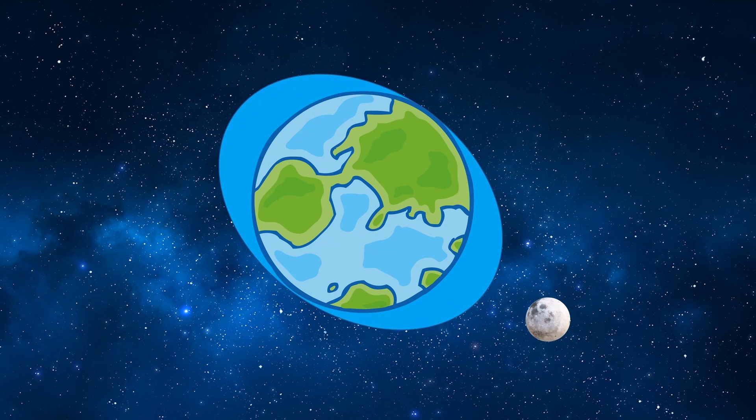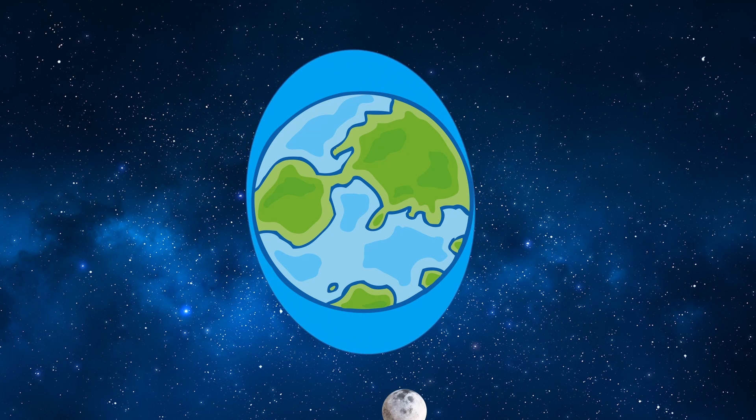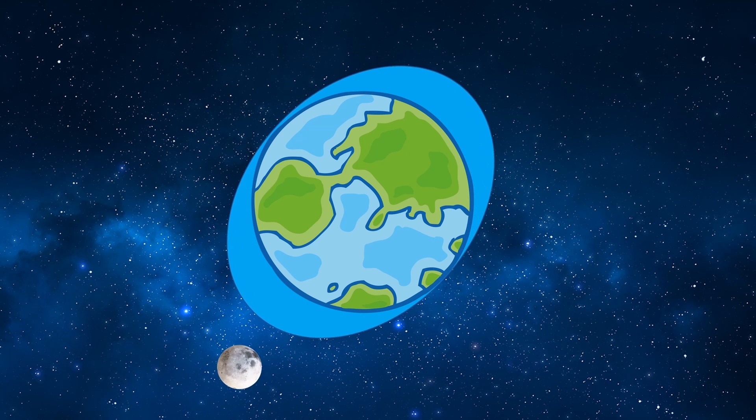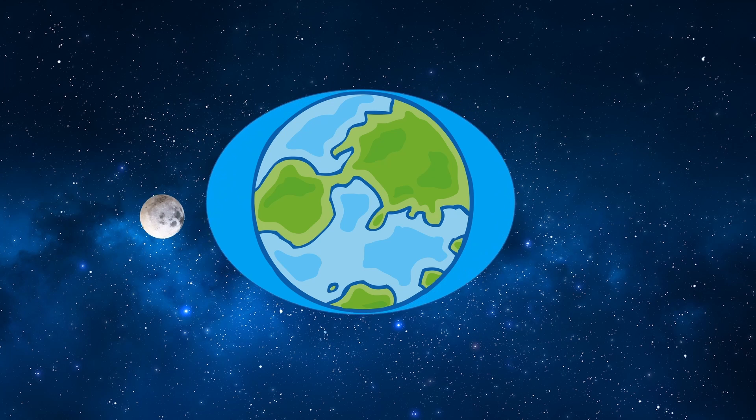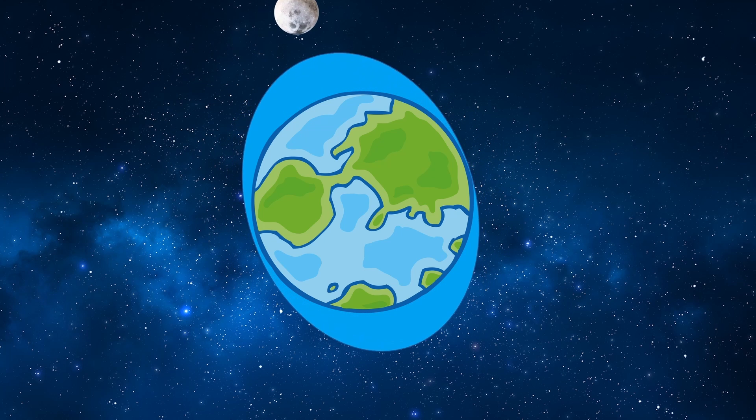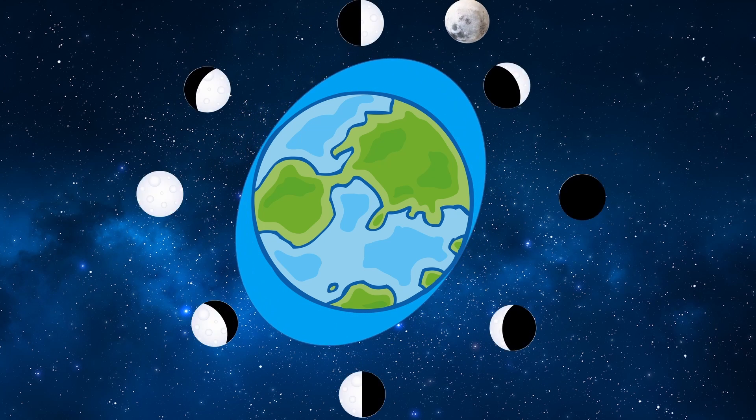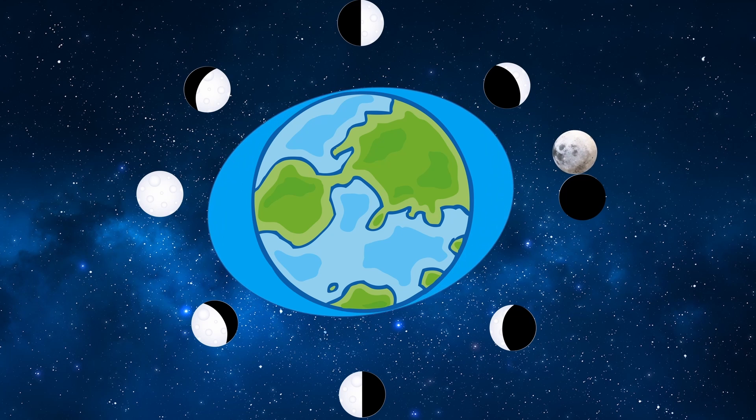As the moon orbits the earth, the tidal bulge is moving with the moon. It means the tides that the moon raises on the earth are the same no matter what phase of the moon you see in the sky.